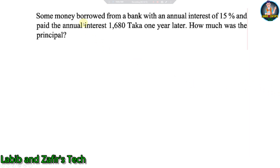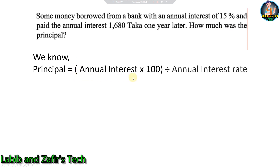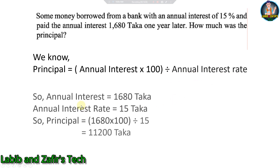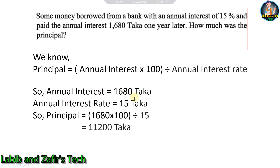Next problem: Some money was borrowed from a bank with an annual interest rate of 15%, and the annual interest paid was 1680 taka. How much was the principal? Solution: Principal = (Annual Interest × 100) ÷ Annual Interest Rate = (1680 × 100) ÷ 15 = 11,200 taka.